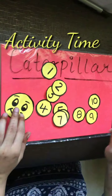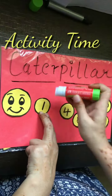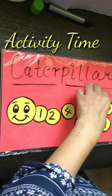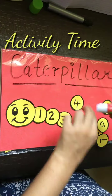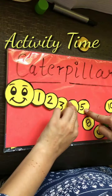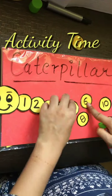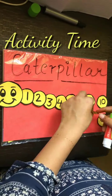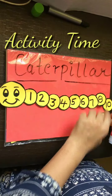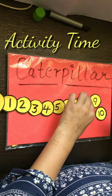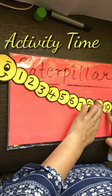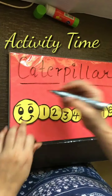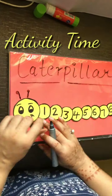Now we will stick all together. This is smiley. Stick all together: number 2, number 3, number 4, number 5, number 6, number 7, number 8, number 9, and last one is number 10. Now our caterpillar is ready.